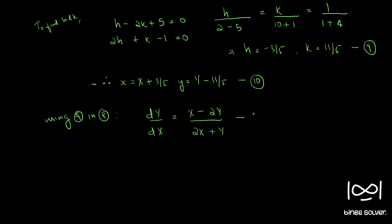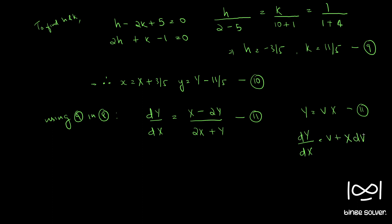This is a homogeneous equation. Equation 11 is a homogeneous equation. We can solve such equations using the substitution Y equal to vX. Differentiating with respect to X on both sides, we get dY/dX equal to v plus X dv/dX.